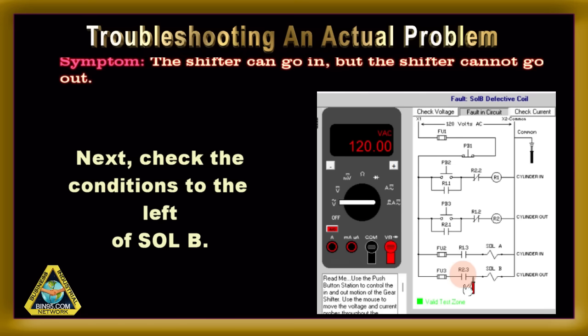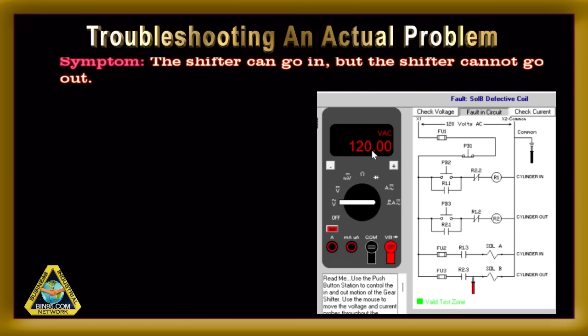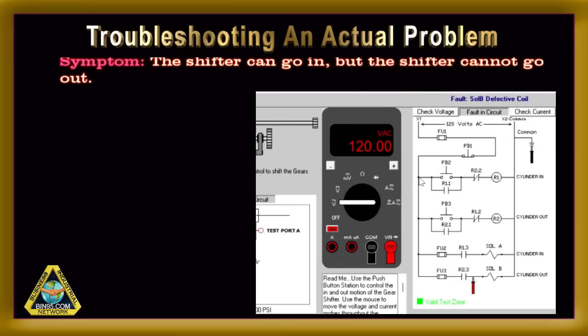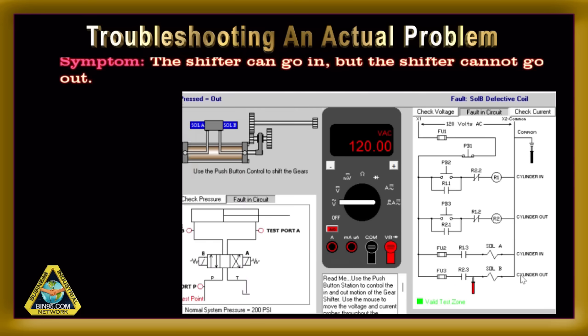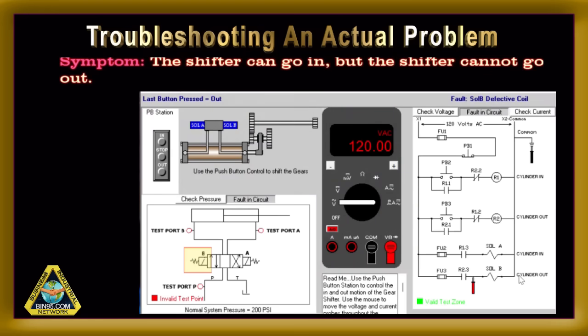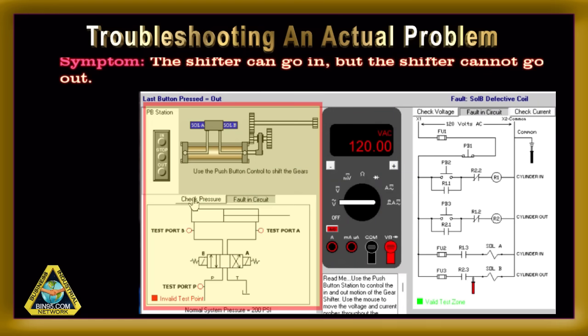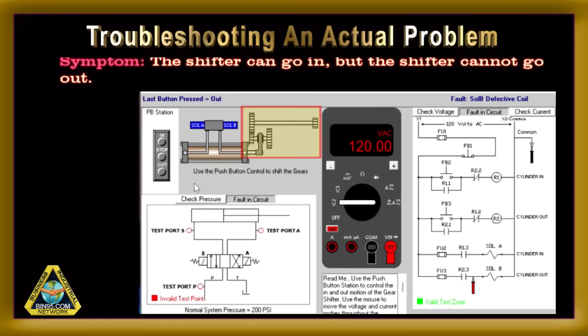We check that condition, asking: is voltage getting through contactor 2.3 to the cylinder out solenoid coil? As we see, the answer is yes. This means the problem is either the coil is burnt out, open, or some other issue outside the control panel. It could be mechanically jammed, the air is off to the cylinder, etc.